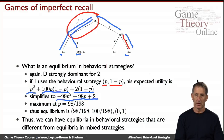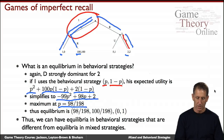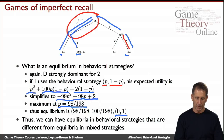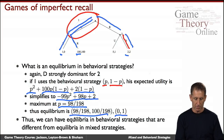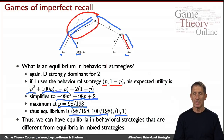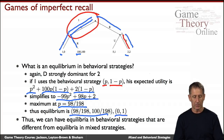We simply look at the maximum of this equation, and the maximum is arrived at a specific value. With probability slightly less than half, player one goes left, and slightly more than half, they go right. So we end up with an equilibrium where player one randomizes this way and player two plays down with probability one. We see that the equilibria with behavioral strategies under imperfect recall can be dramatically different than the equilibria with mixed strategies.